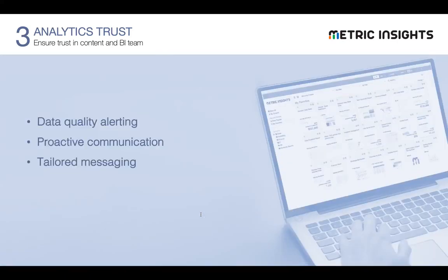To do that, you need three things. You need data quality alerting — you've got to know that there's a problem, and that alerting needs to go to the right stakeholder to take action. You also need communication around that — just having the alert go to analysts is probably not sufficient if there's no proactive way to communicate to end users that today's data is either delayed or suspect. And that messaging needs to be tailored — if I'm in the manufacturing group, I don't want to see a message about a problem in finance. I need to know only about issues affecting the content I consume.